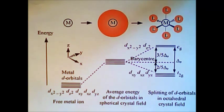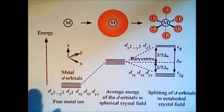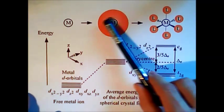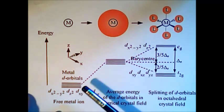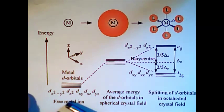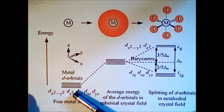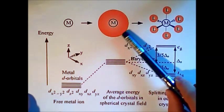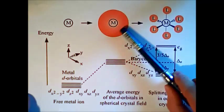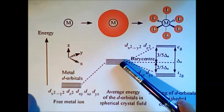Hello again. This is the second part of our tutorial about crystal field theory. I hope you remember the important diagram from last time. We said that the free metal ion, for example copper 2-plus, raises up in energy under the influence of an electric field from negatively charged ligands.